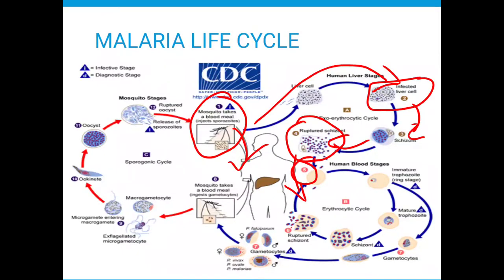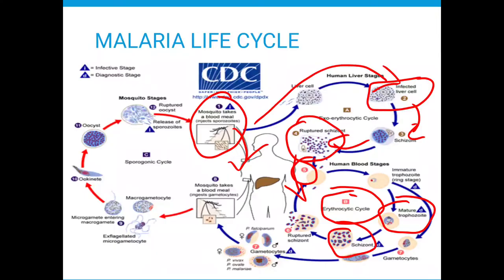Once the merozoites are released, the erythrocytic cycle stage begins. At this point, the merozoites seek out red blood cells. When the red blood cells are found, the merozoites penetrate the host red blood cell, and inside the merozoites develop into what are known as trophozoites. The trophozoites then divide into segmented states known as schizonts, just as occurred inside the liver, but this time it is occurring inside the red blood cells.